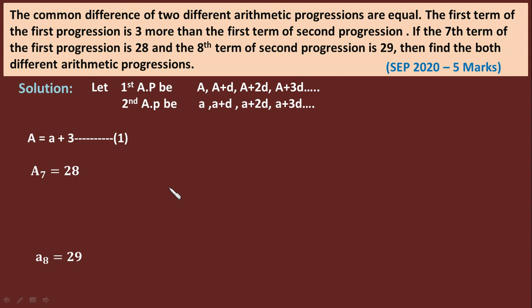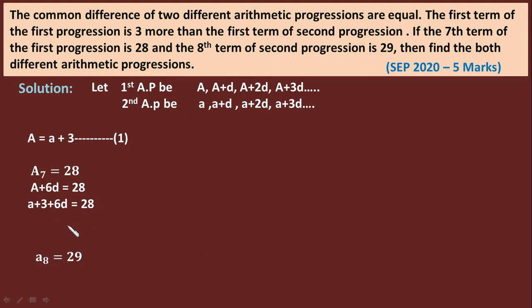Let us solve these equations. We can write A₇ as A + 6d = 28. From equation 1, capital A = small a + 3, so substituting: a + 3 + 6d = 28, which gives a + 6d = 25. Let this be equation 2. Similarly, for a₈ we write a + 7d = 29. Let this be equation 3.